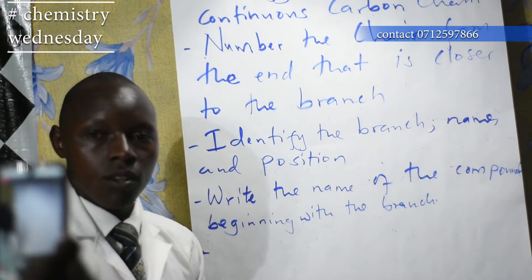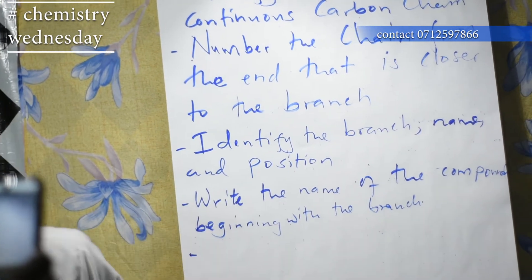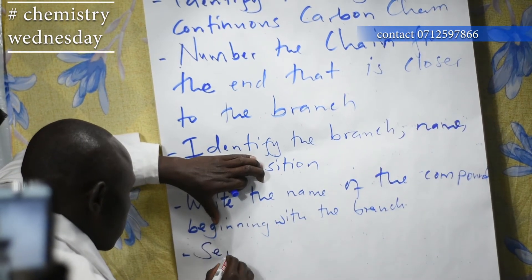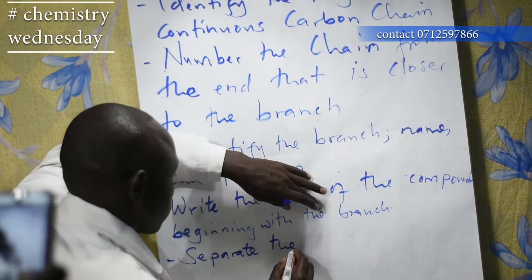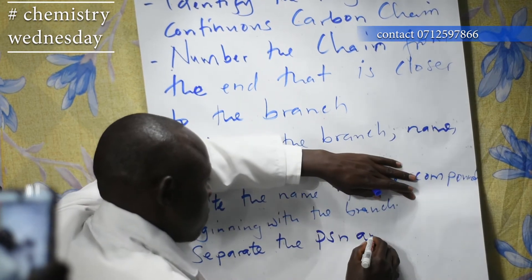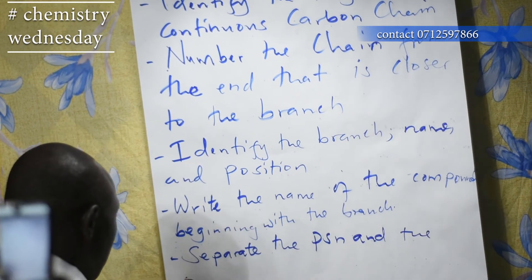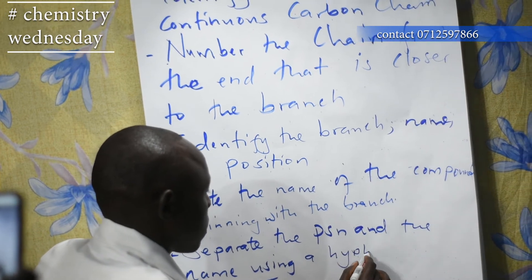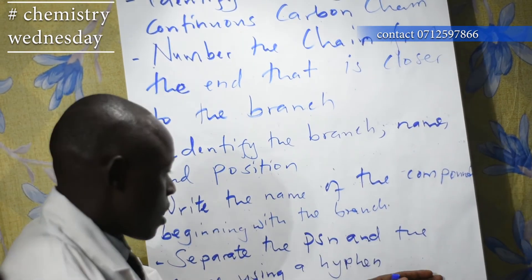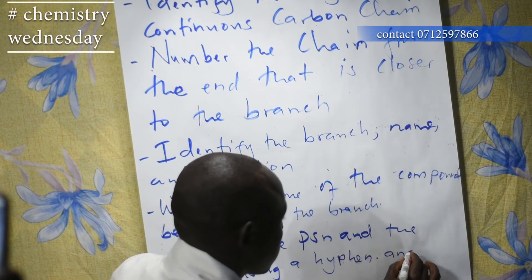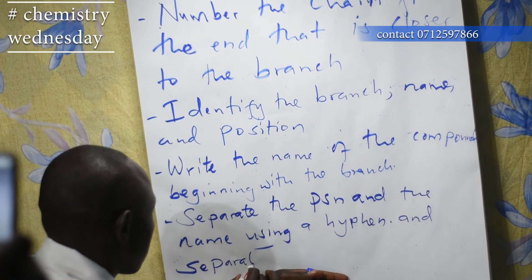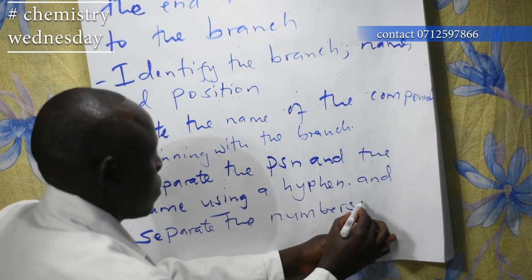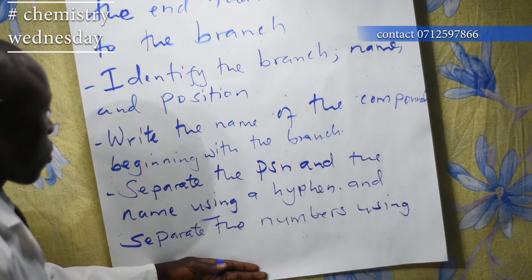Now let us do a summary of isomerism. Rule 1: identify the longest continuous carbon chain. Rule 2: number the chain from the end that is closer to the branch. Rule 3: identify the branch, and identify the branch name and position. Rule 4: write the name of the compound beginning with the branch, and separate the position and the name using a hyphen. Separate numbers using a comma.